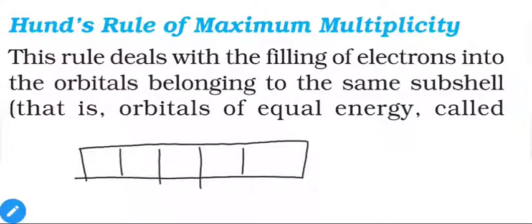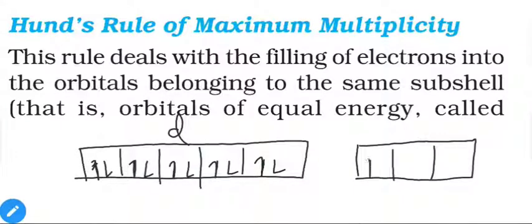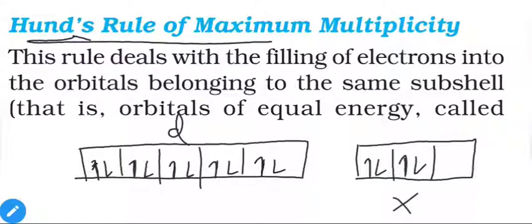The same applies to d orbitals — all five d orbitals are equal in energy. Electrons fill each empty orbital singly first (orbitals 1 through 5 each get one electron), then pairing begins from the sixth electron onward. For p orbitals, four electrons cannot pair in two boxes while leaving one empty — each orbital must have at least one electron before pairing starts.